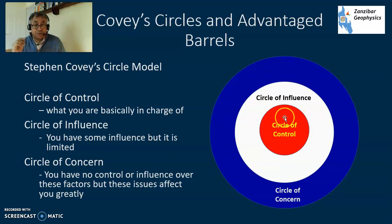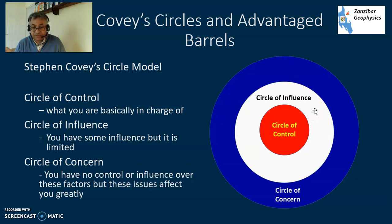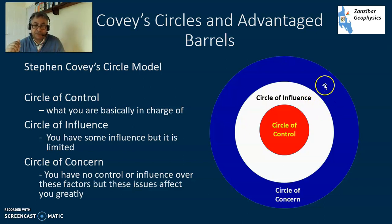Covey has this model of three circles. In the middle you've got your circle of control - that's what you're basically in charge of. Then you have your circle of influence - this is what you've got influence over, but you're not in control of it. It takes two to tango - a relationship between the two parties.